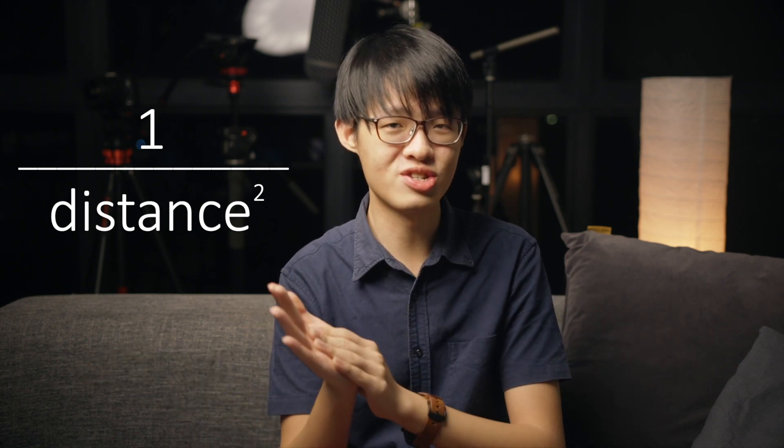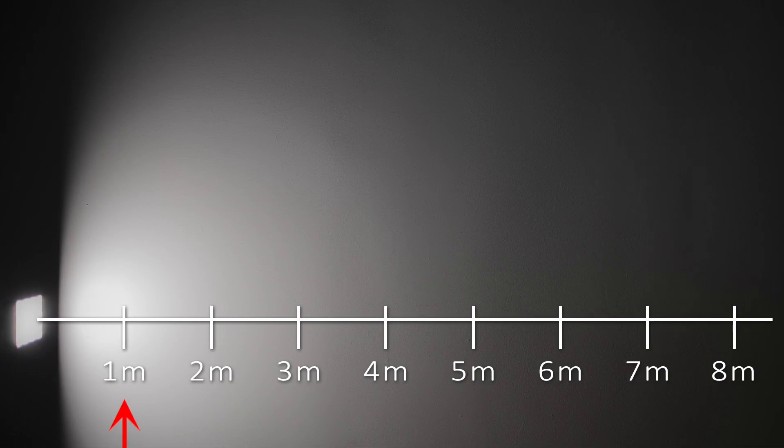There is a calculation formula for the inverse square law. Fortunately, it's not complicated at all — it's 1 over distance squared. That's it. So let's run some quick maths. For simplicity's sake, let's just use meters as our unit of distance. We'll start with our subject at 1 meter away from our light source, and that's going to be our reference brightness. We'll define that as 100%, and if you run the formula on it, it gives you 1 over 1.